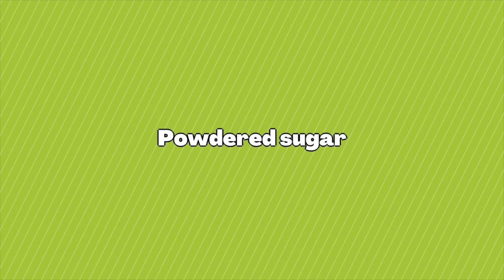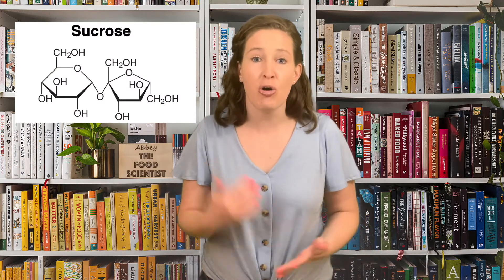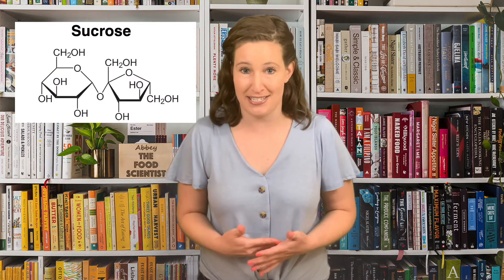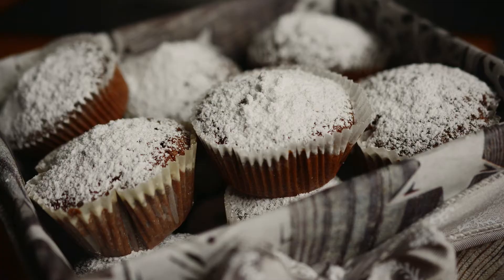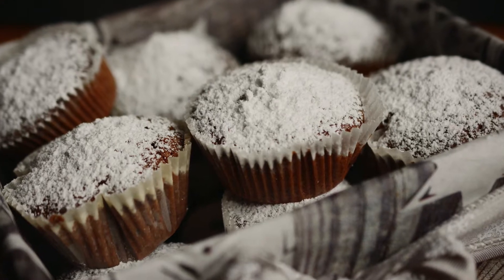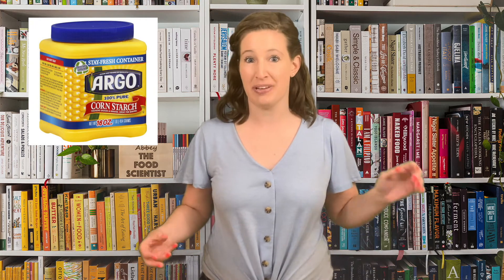On to the sugar known for making the most mess — I'm talking about powdered sugar. Powdered sugar is simply table sugar; it's those sucrose molecules, but you just pulverize those crystals to get a much finer powder. These small particles sometimes stick together really easily, so usually powdered sugar has a bit of cornstarch added to prevent caking. Overall, powdered sugar is just table sugar at a much smaller particle size.